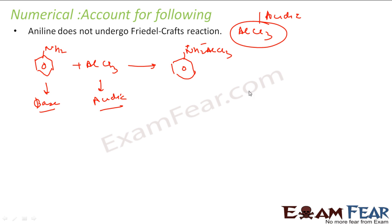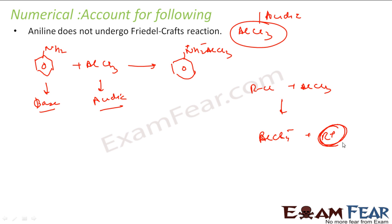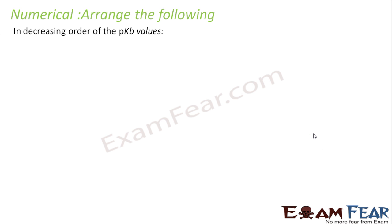In Friedel-Crafts reaction, AlCl3 is used to generate R+ (a strong electrophile) from RCl — forming AlCl4 minus and R plus. But if AlCl3 itself reacts with the reactant (aniline), this electrophile generation will not happen. So since aniline is basic and AlCl3 is acidic, they react to form a salt, and the purpose of generating R+ is defeated.